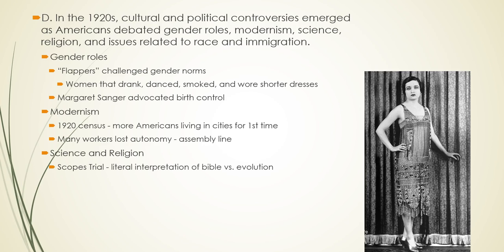William Jennings Bryan prosecuted John Scopes while Clarence Darrow defended him — two of the most famous lawyers in the United States. William Jennings Bryan had run for president multiple times in the 1890s. Scopes was found guilty, though his conviction was overturned on a technicality. The significance lies in what the trial says about the national debate: Are we a religious society or a scientific society? Another debate we are still having today.